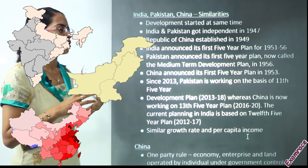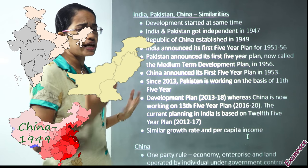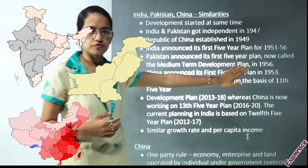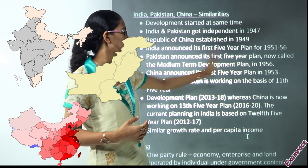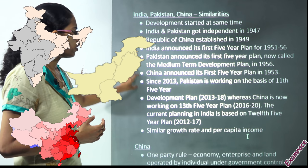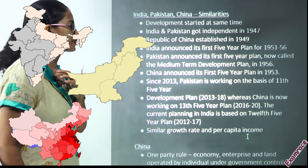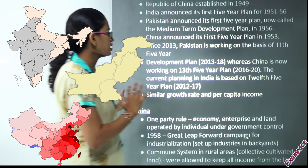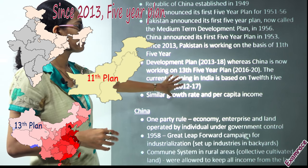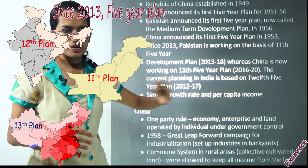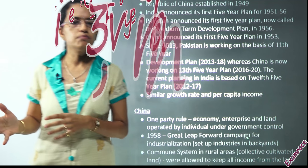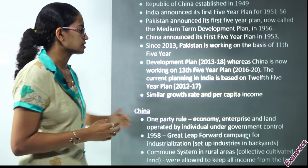China became the People's Republic of China in 1949. India and Pakistan attained freedom in 1947. In India, the first five-year plan was announced in 1951–56. Pakistan had its first medium development plan in 1956, and China announced its first plan in 1953. All had their first plans in close proximity around the 1950s. Toward 2013, Pakistan had its 11th five-year plan, China its 13th, and India its 12th — showing a correspondence in planning sequences.